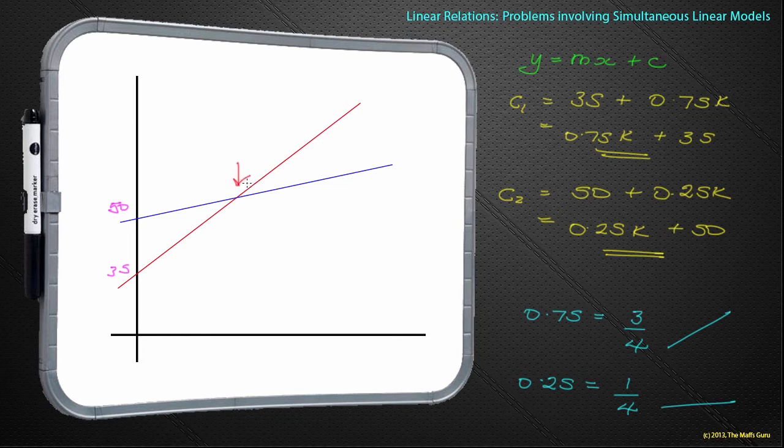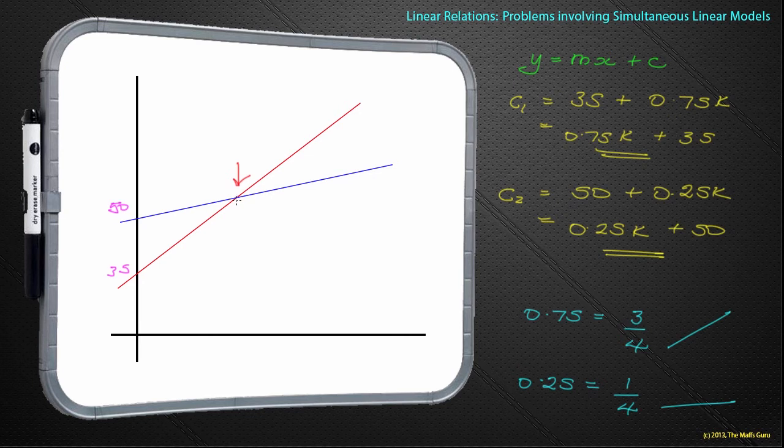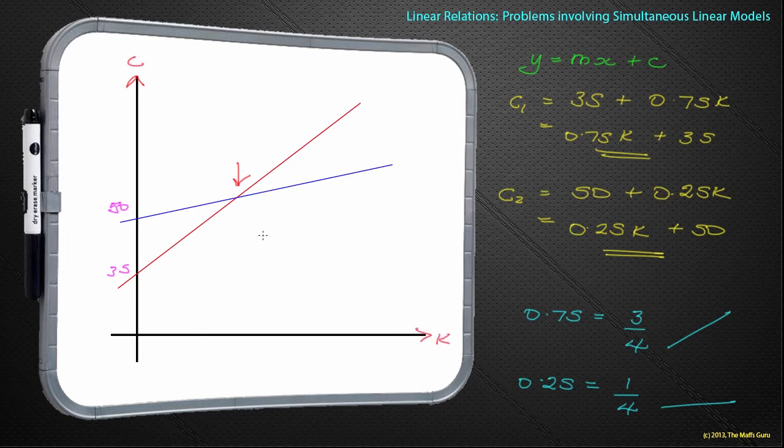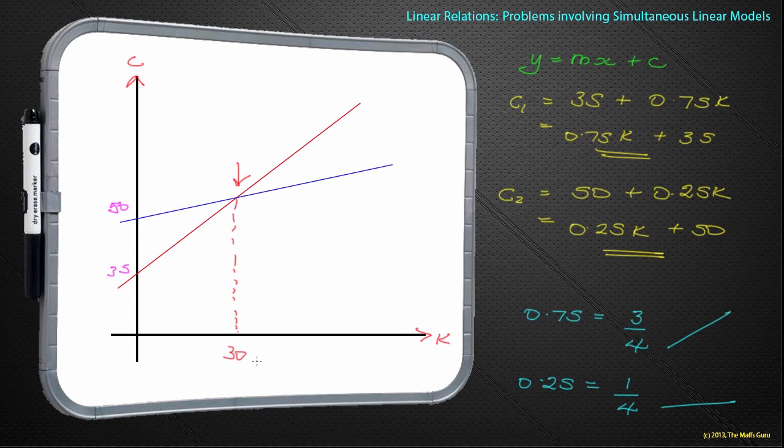And, if you remember from our previous lesson, simultaneous equations, that's where two lines meet, that is the point where the values are the same. Now, that means that the value of the cost and the distance is going to be exactly the same. So, if I was to label my axis, that there would be cost. This here would be the number of kilometres. And, so, the point that it crosses, if we were to mark this down, would actually be 30.